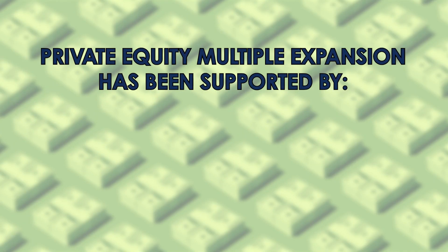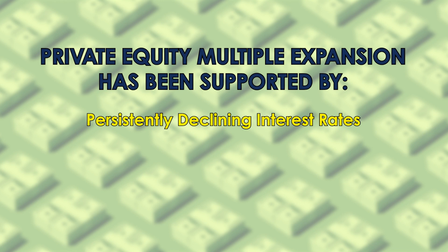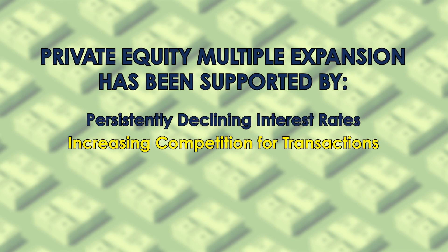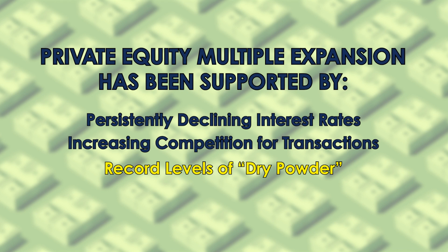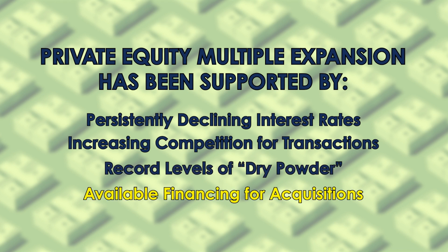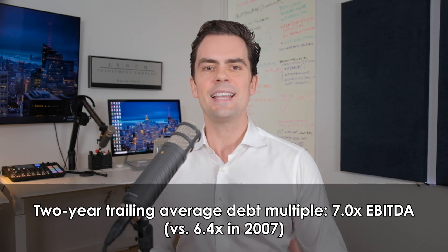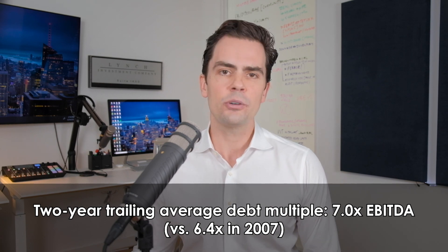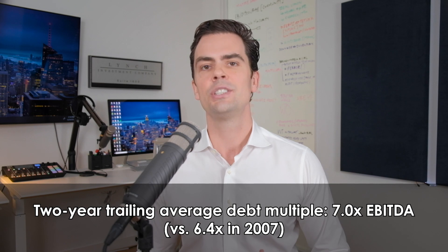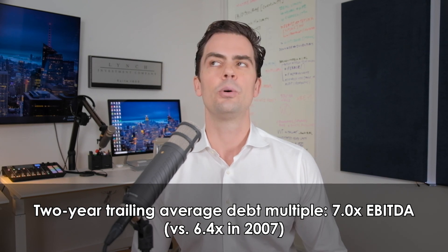I've been thinking for years that multiples are high, only to watch them continue rising. Private equity multiple expansion has been supported by persistently declining interest rates, increasing competition for transactions, record levels of dry powder — which is to say the amount of capital devoted to the space and waiting to be deployed — and available financing for acquisitions. Collectively, these variables have caused the entire capital stack, measured as a multiple of EBITDA, to expand. Per McKinsey & Company, the amount of leverage employed in U.S. buyouts is at an elevated level today compared to much of the past two decades. The two-year trailing average stands at seven times EBITDA, and that compares with 6.4 times in 2007, just prior to the Great Recession — which, in this context, is an alarming period to be replicating or even exceeding.